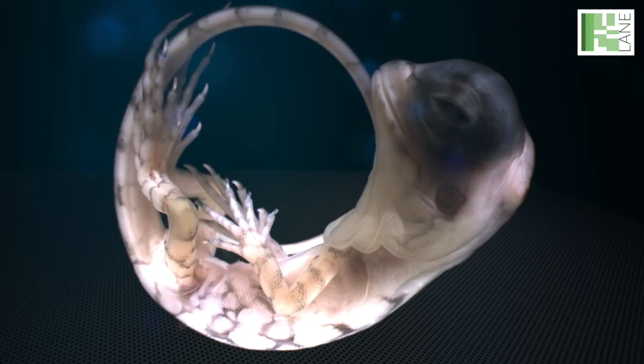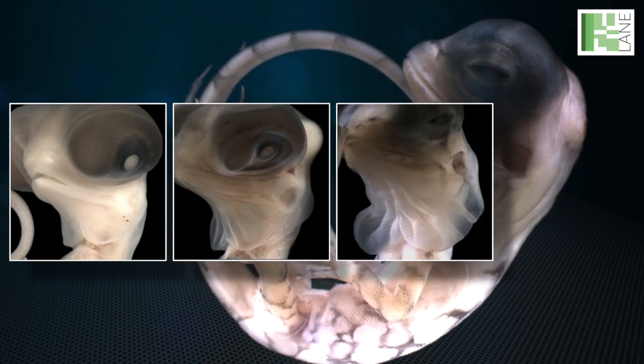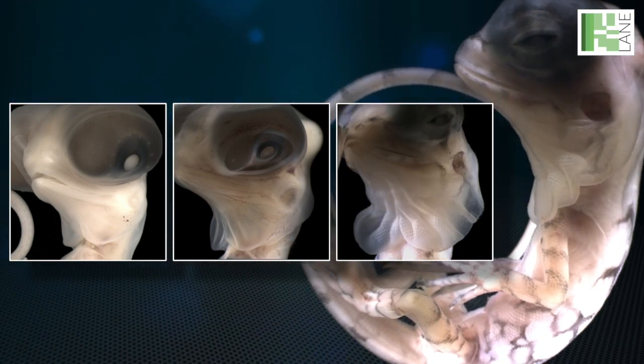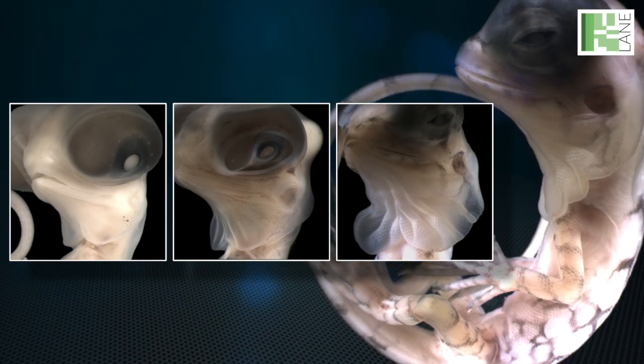In many species, the second branchial arch will eventually fuse with the arches behind it. But in the frilled dragon, this arch instead continues to expand, leading to the formation of the dragon's spectacular frill.